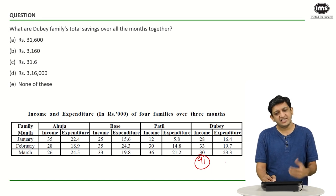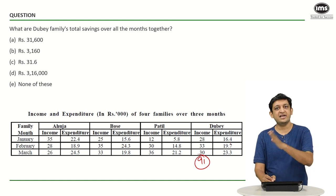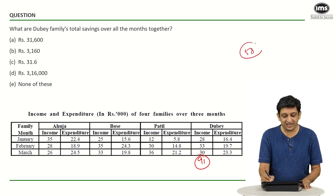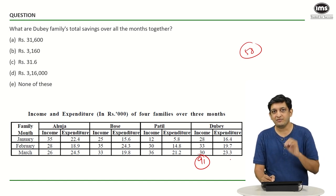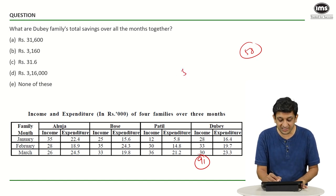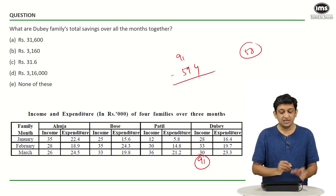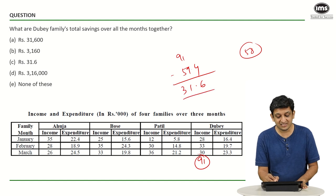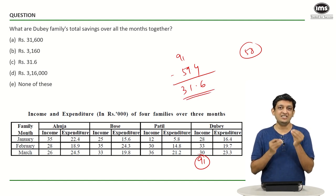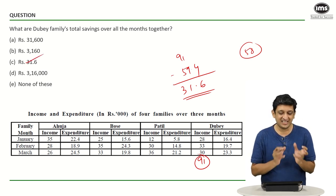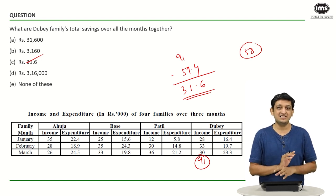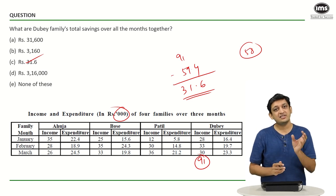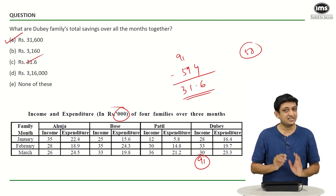For expenditures: 16.4, 19.7, and 23.3. Adding the integral parts: 16 plus 19 is 35, plus 23 is 58. Adding the decimals: 0.4 plus 0.7 is 1.1, plus 0.3 is 1.4. So total expenditure is 59.4. Out of 91 earned, 59.4 was spent, leaving 31.6. But the data is given in rupees thousands, so the answer is 31.6 thousand, or 31,600 rupees. The correct answer is option A: 31,600 rupees.